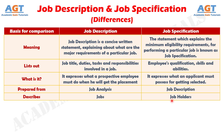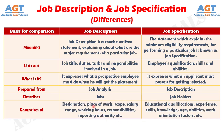And difference number six: job description contains designation, place of work, scope, working hours, responsibilities, reporting authority, salary range, etc. On the other hand, job specification contains educational qualifications, experience, skills, knowledge, age, abilities, work orientation factors, etc.